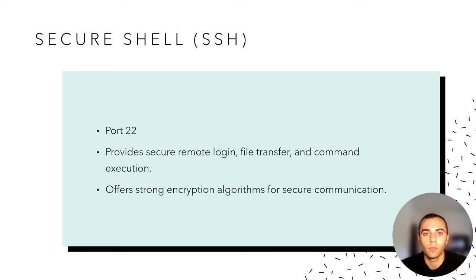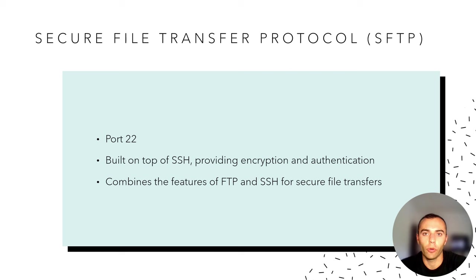Next up, we have Secure Shell, or SSH, which operates on port 22. SSH provides a secure encrypted connection for accessing remote servers and devices, ensuring the confidentiality, integrity, and authenticity of data transmission. Moving on to Secure File Transfer Protocol, or SFTP, also on port 22. SFTP is a secure version of FTP that uses SSH to encrypt data during transmission, providing secure file access, transfer, and management.